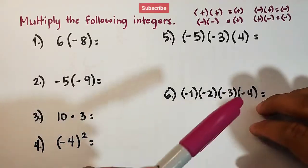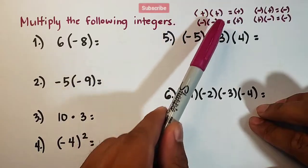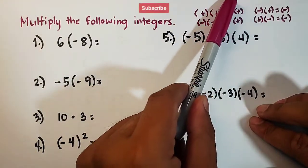If you will multiply two integers with like signs, like this one, positive positive, negative and negative, it will give you the product of a positive integer.